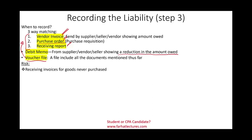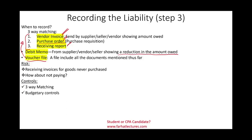What are the risks in this step? Receiving invoices for goods never purchased — someone in the receiving department could be preparing fake receiving reports. Controls include three-way matching, budgetary controls to ensure you're not paying too much, and analytics looking for duplicate payments or duplicate liabilities. Segregation of duties: the people that record the liability should not be able to place the order or receive any items. The voucher system — having all documents in order — is required before making the cash payment.